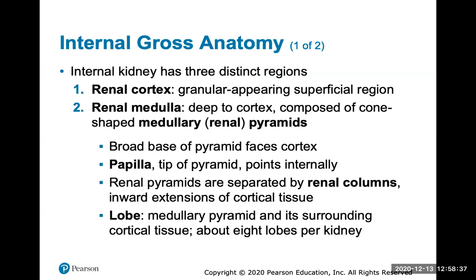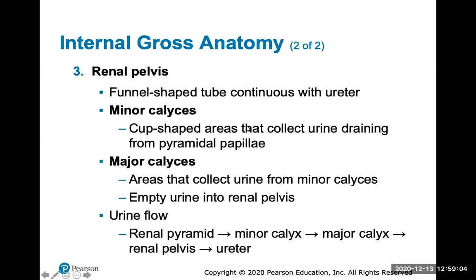The internal anatomy of the kidney includes a green cortex, which is the outer superficial region, and the renal medulla, which is deep to the cortex and is composed of cone-shaped renal pyramids. The papilla is the tip of the pyramid that points internally. The renal pyramids are separated by renal columns, and a lobe is one medullary pyramid and all its surrounding tissue — there are about eight lobes per kidney.